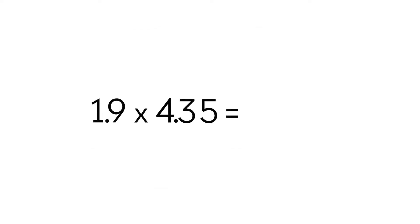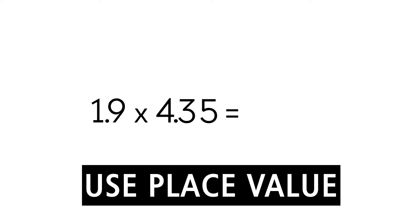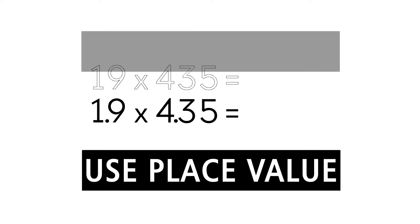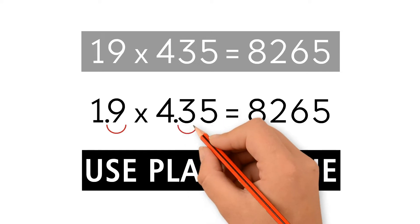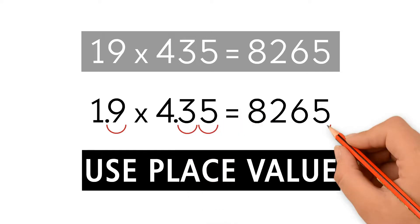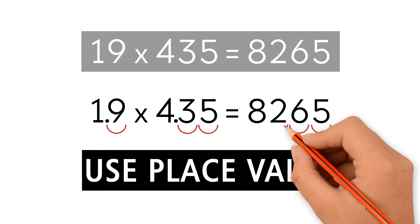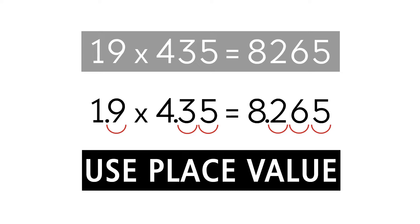The second method is using place value. We multiply as whole numbers and we get 8,265. Now let's go back to decimals. Count the digits after the decimal point in each factor and add them up. Here we have 3 digits: 1, 2, 3. So we move the decimal point to the left 3 times and we get 8.265 again.